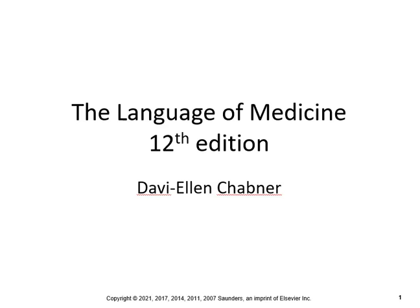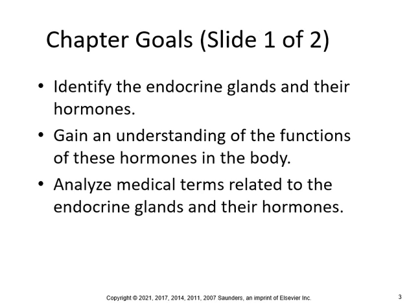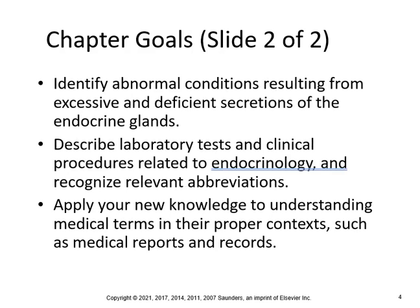Chapter 18, the endocrine system. A lot of times people don't fully understand the endocrine system, so it's one of those systems like the lymphatic system that goes under the radar, but when something goes wrong, you really know how important this system is. Learning objectives: identify the endocrine glands and their hormones, gain an understanding of the functions of these hormones in the body, analyze medical terms related to the endocrine glands and their hormones, identify abnormal conditions resulting from excessive and deficient secretions, describe lab tests and clinical procedures related to endocrinology, recognize relevant abbreviations, and apply your knowledge to understanding medical terms in proper context.